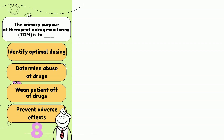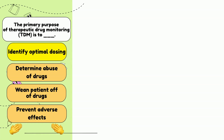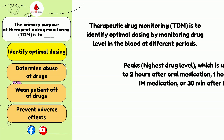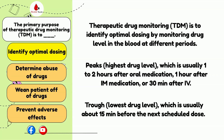The primary purpose of therapeutic drug monitoring is to — the answer involves adjusting doses or the frequency of medications based on results, which is usually timed around 15 minutes before the next scheduled dose. Based on the results, the doctor will adjust the doses or the frequency of the medications.